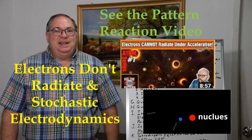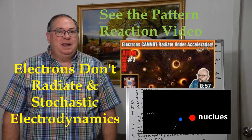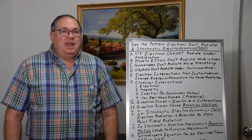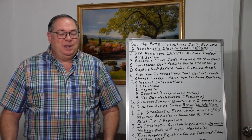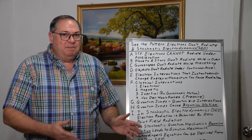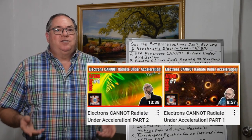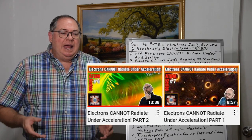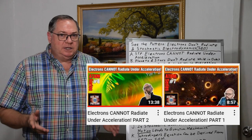One of my subscribers asked me to do a reaction video to a couple of 'See the Pattern' videos by Gareth Samuel on why electrons can't radiate due to acceleration. I thought that would be a good opportunity to talk about stochastic electrodynamics as well, because that provides the solution to what's really going on. His title was 'electrons cannot radiate under acceleration,' which is true. He has two videos on it — I'll put links below, so please go watch them.